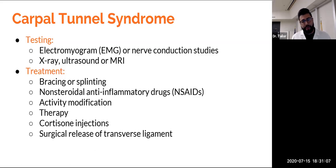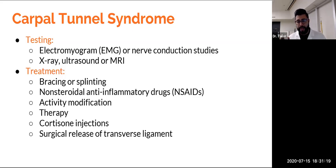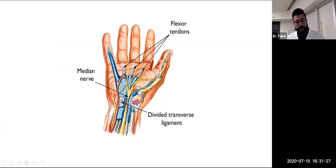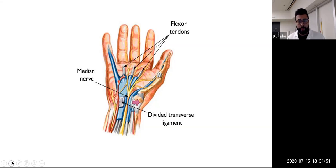Non-steroidal anti-inflammatories: ibuprofen, Aleve, and so on. Activity modifications, therapy, and cortisone injections — direct anti-inflammatories to the carpal tunnel to reduce swelling. The worst case scenario is to cut the ligament that is continuing to compress the carpal tunnel, freeing the nerve so there's no longer any compression, and the nerve should have reduction in symptoms. The most I will do is about two injections three months apart. If it still came back after two injections, then I would recommend a release. However, if someone has very bad carpal tunnel and is starting to lose musculature in their hands and weakness, then we might expedite a surgical referral.